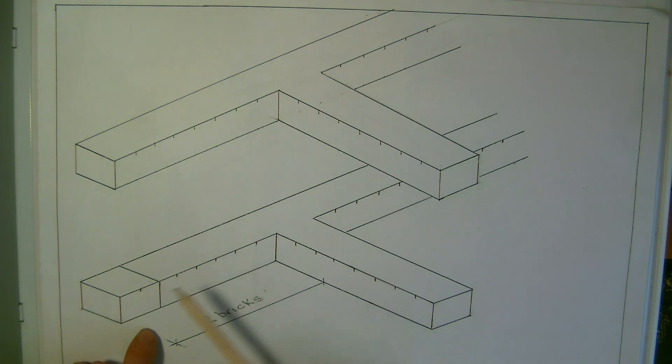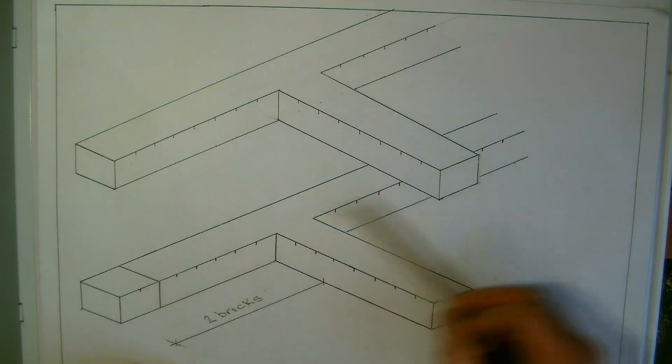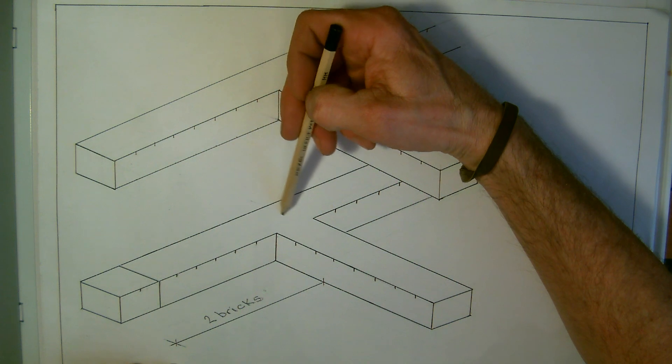And if we just look at these, you can see we've got these divisions on here. Each one of these is quarter of a brick, so you see here the half has two, so obviously four of these would be a full brick.